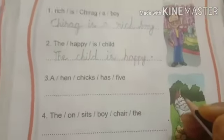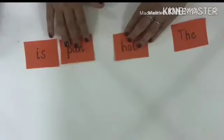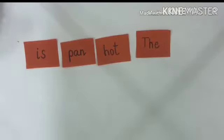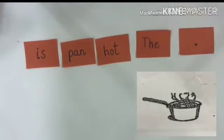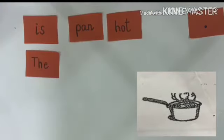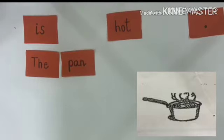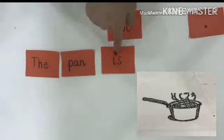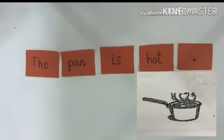One more example. The words given are: pan, the. The first capital letter is 'The', so that is the start of the sentence. The picture shows a pan, so we write: the pan. What does the pan show? Let's imagine — it's showing that it's hot. So the sentence is: The pan is hot. Put the full stop and it completes the sentence.